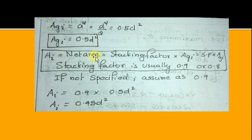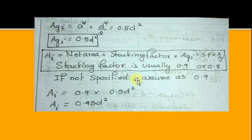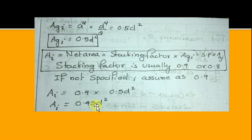Substituting A as D / √2, the gross area A_GI is 0.5 D². To find net area A_I, multiply the gross area by the stacking factor. The stacking factor is usually 0.8 or 0.9; if not given, take it as 0.9. Then net area is 0.9 × 0.5 D² = 0.45 D².